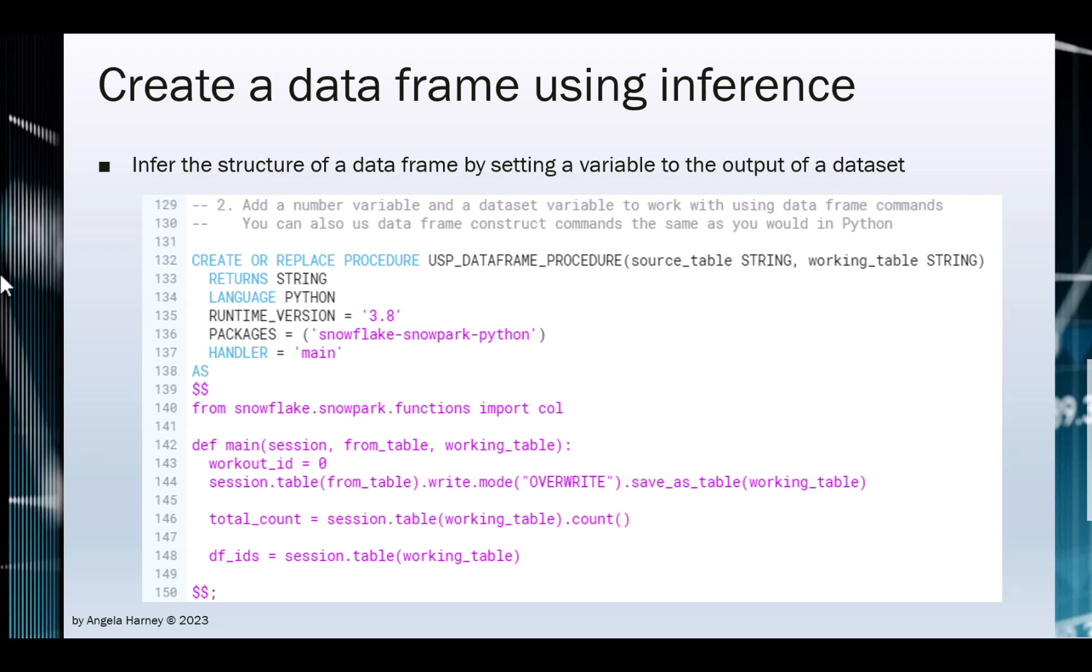The Snowpark API does lazy evaluation, which means the object is not automatically created until an action such as the .write command or .collect or .show is issued. .collect and .show will bring data to the stored procedure and are not intended to be applied to large datasets.